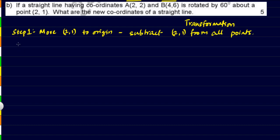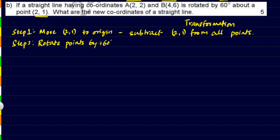Step 2: once we have moved the point about which we rotate to the origin, the next thing is to actually rotate the points by 60 degrees. Since it has not been specified whether it is clockwise or anticlockwise, we'll assume anticlockwise and take a positive angle. For rotation we'll multiply the rotation matrix — this is two-dimensional, so it is rotation about the z-axis by 60 degrees.